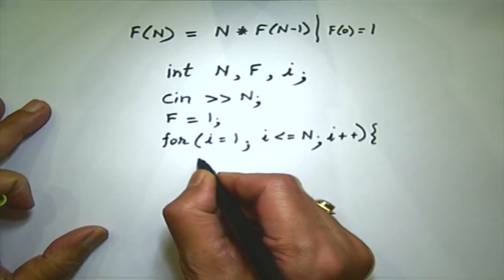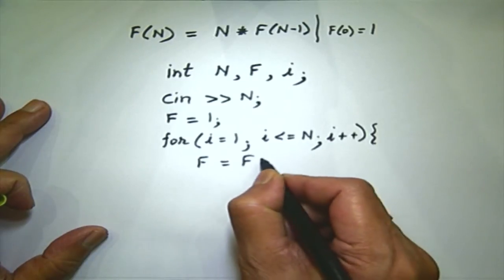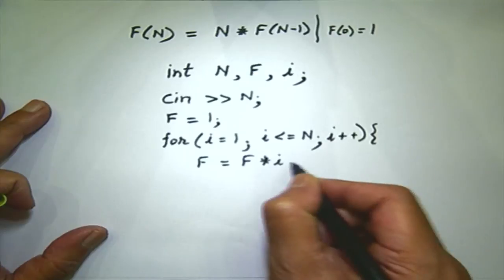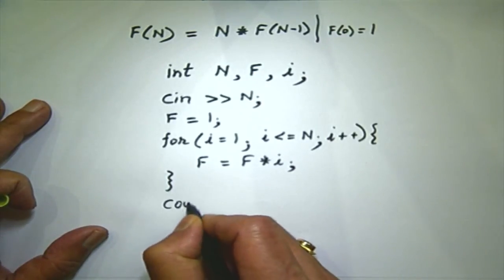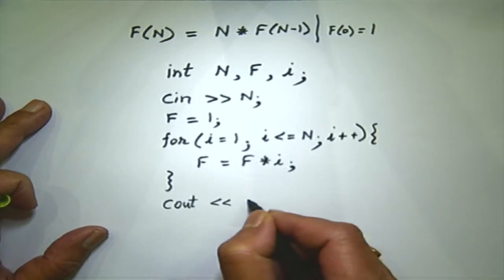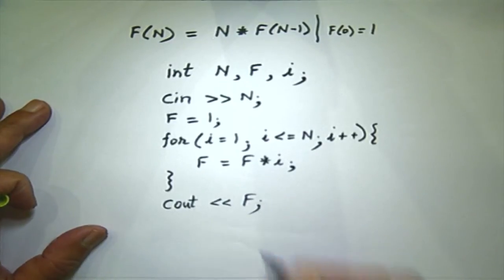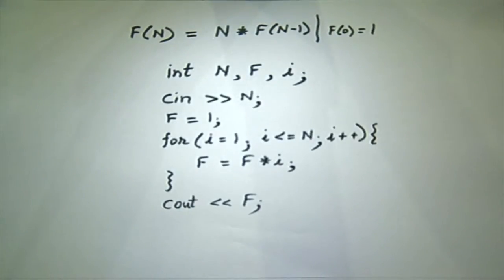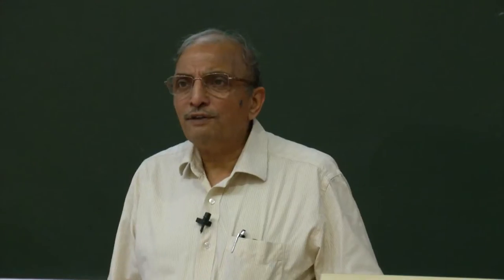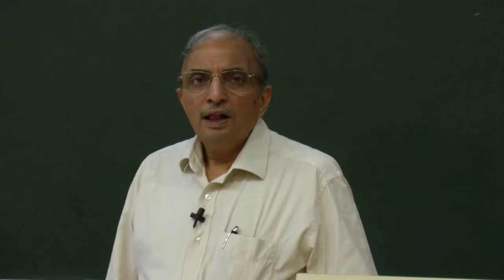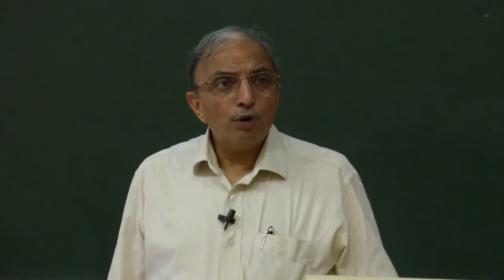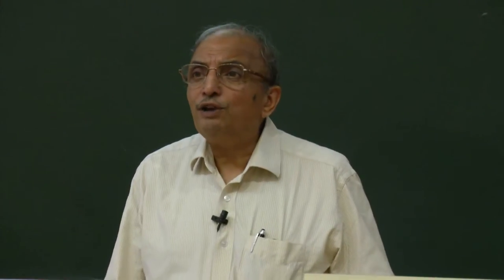If you say f equals f multiplied by i, come out of the loop, and output f, you will calculate factorial n — assuming the input is a positive integer. This program implements the solution using an iterative process. If you were to do it recursively, how will you implement it?